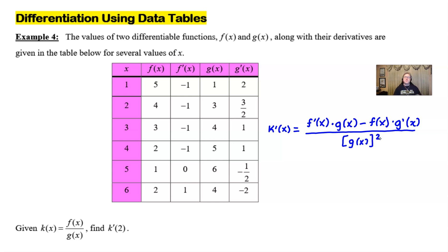And so there's your quotient rule. Now we just have to find a very specific value for this derivative. And it says that that value is 2.